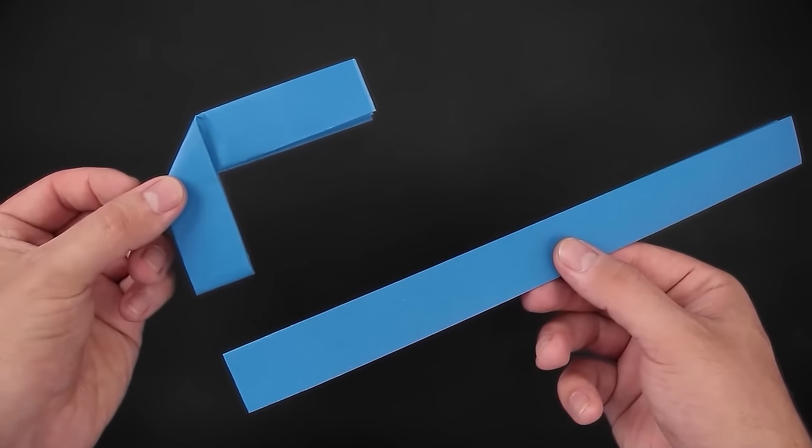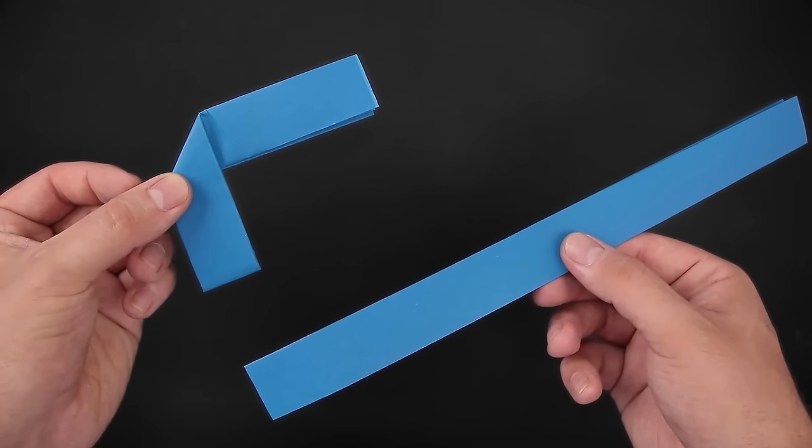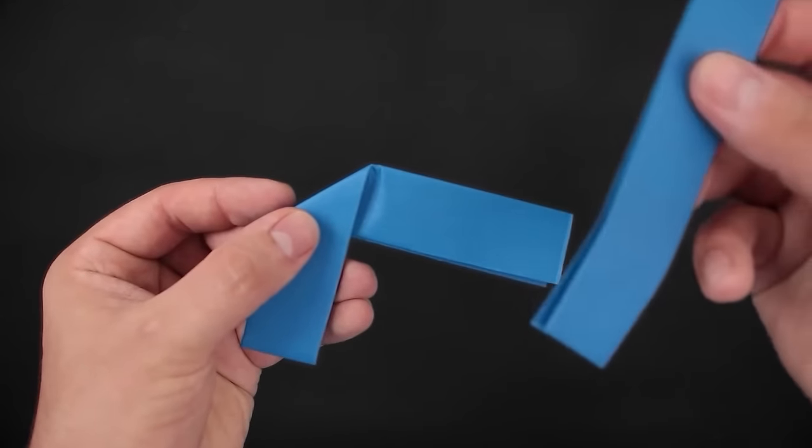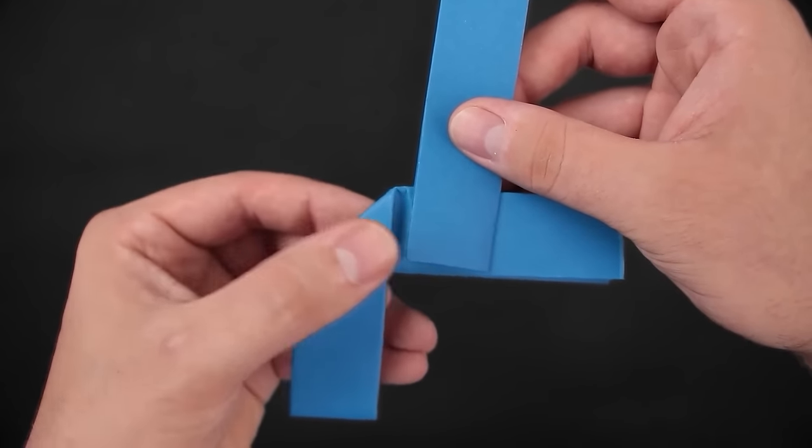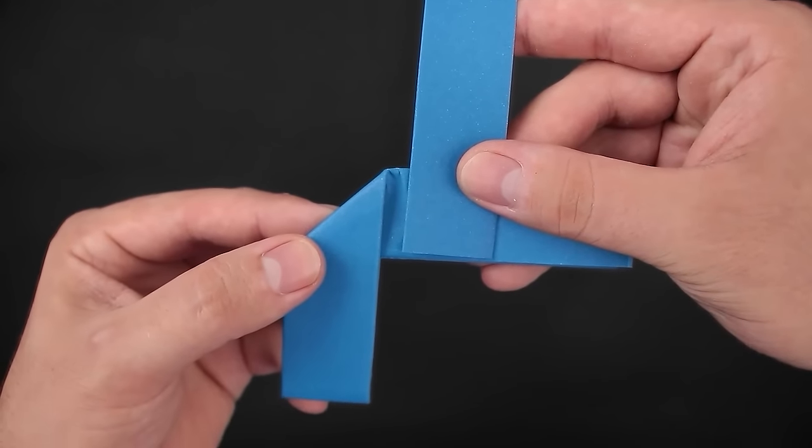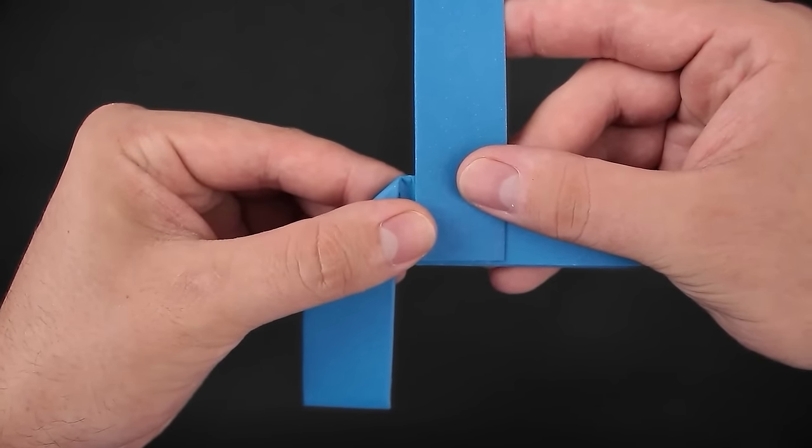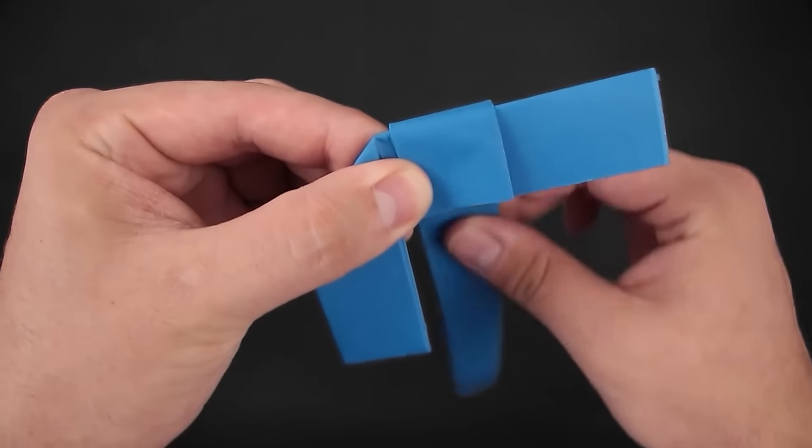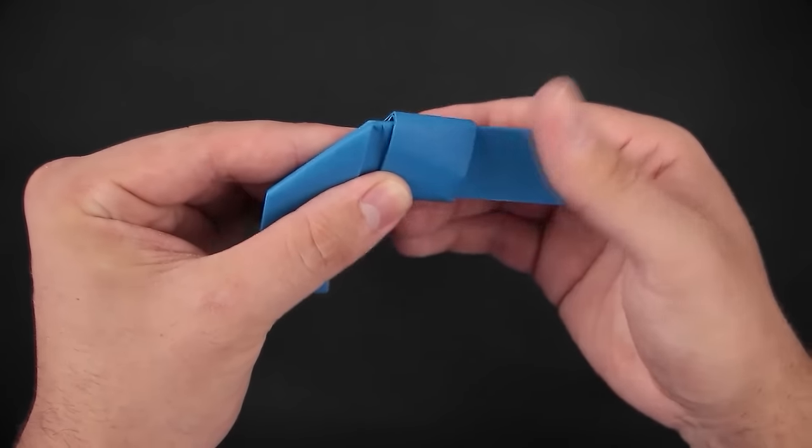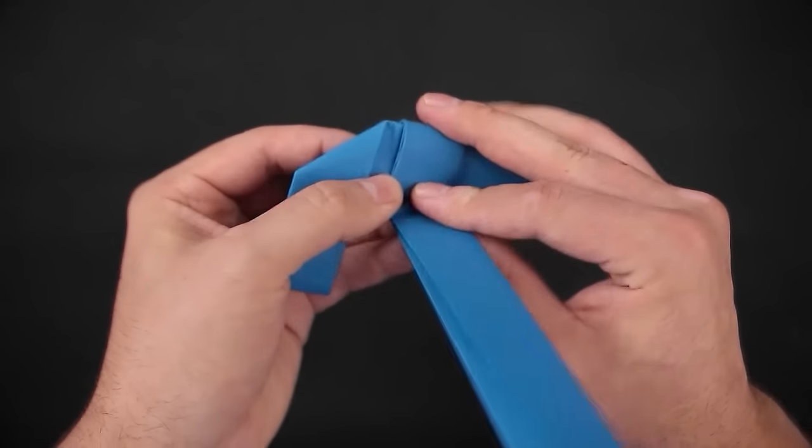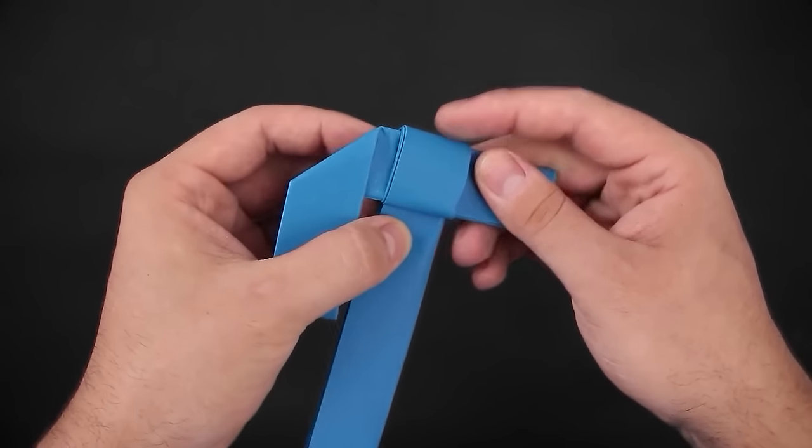Now that we have these two pieces ready, we're going to have to wrap the second part, the second piece, around this part of the first one. Just like this.